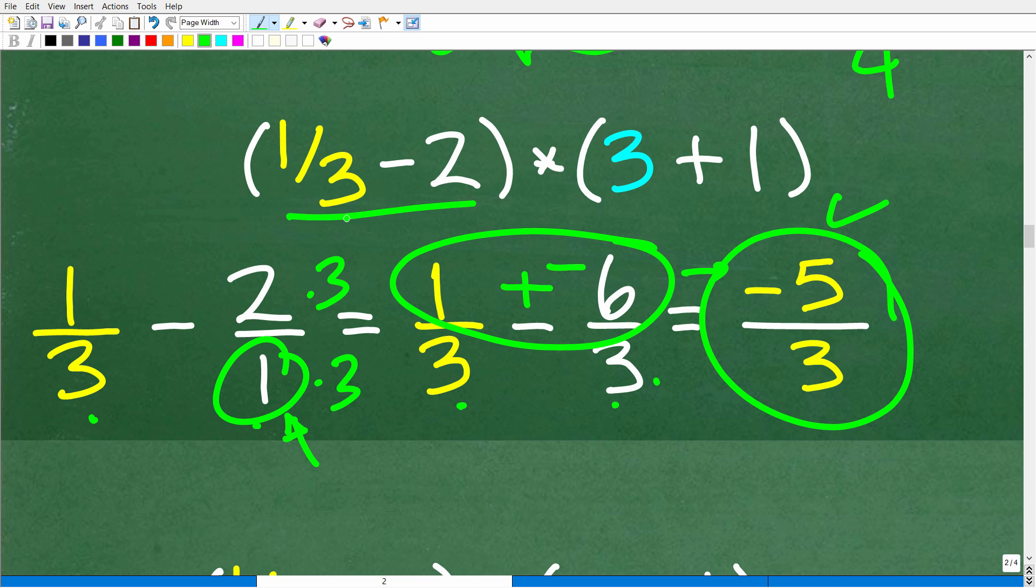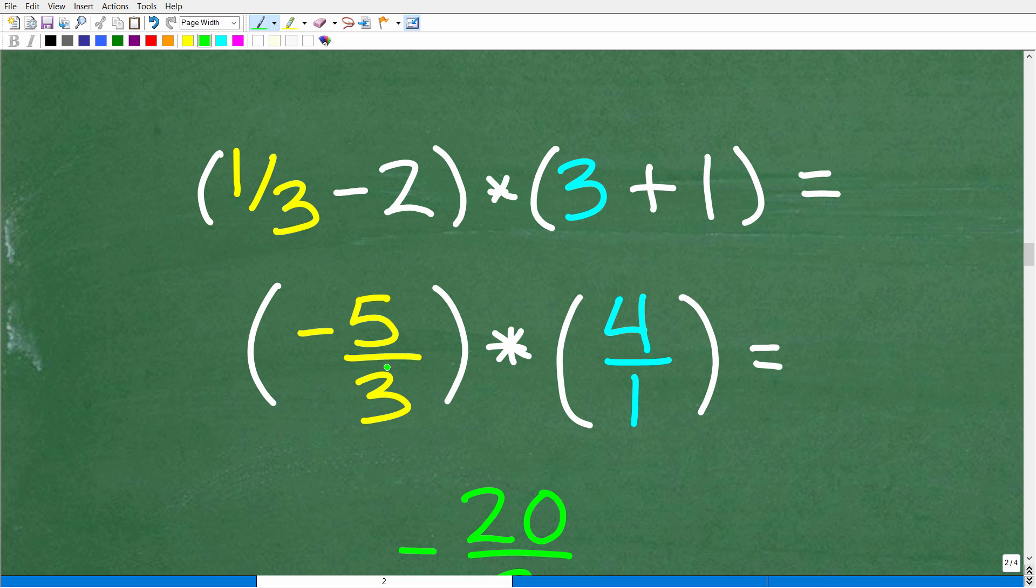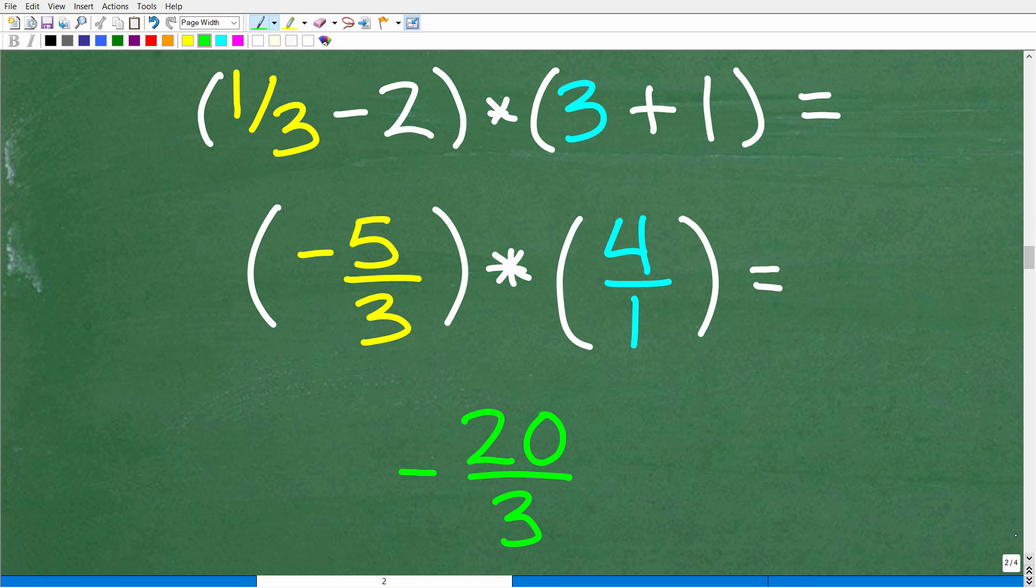Alright, now if you didn't get this right, this fraction part right, well, you definitely need some review with fractions. And again, check out my Math Foundations course. But also I have a ton of additional videos on my YouTube channel as well. Alright, so we're almost there. So what we did is figured out 1/3 minus 2. That's equal to negative 5/3 times 3 plus 1, which, of course, is 4. But let's express that 4 as a fraction. We'll have that as 4 over 1. Because when we multiply fractions, what we need to do is multiply the respective numerators and denominators. And we're going to show you that here. So we're just going to multiply across. So negative 5 times 4 is negative 20 over 3 times 1, which, of course, is 3. So our answer is negative 20 over 3.